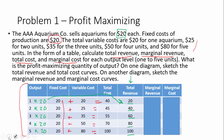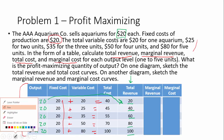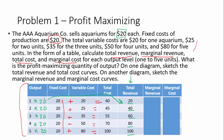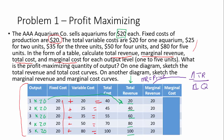Now we're going to do margins. Marginal revenue equals the change in total revenue divided by the change in quantity. In a perfectly competitive market, marginal revenue is also equal to the price. So at every output level, the marginal revenue is $20.